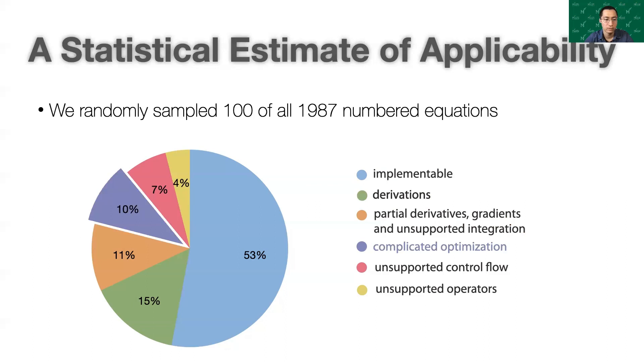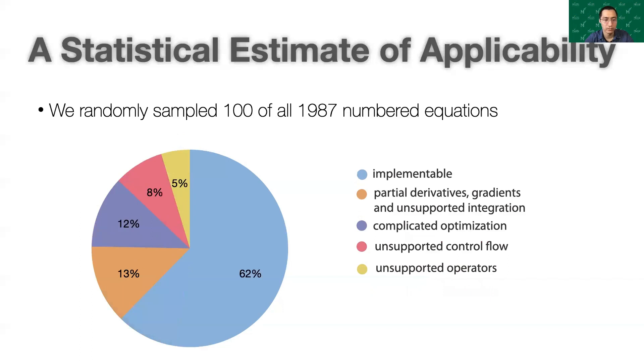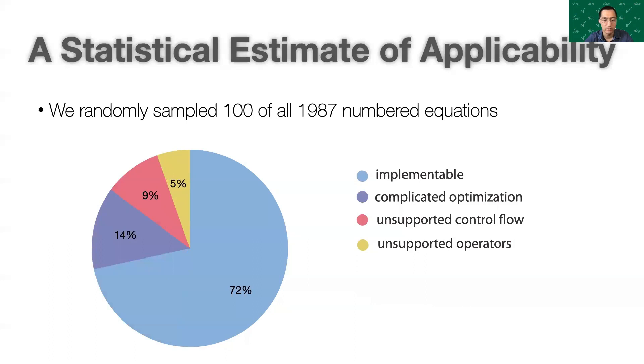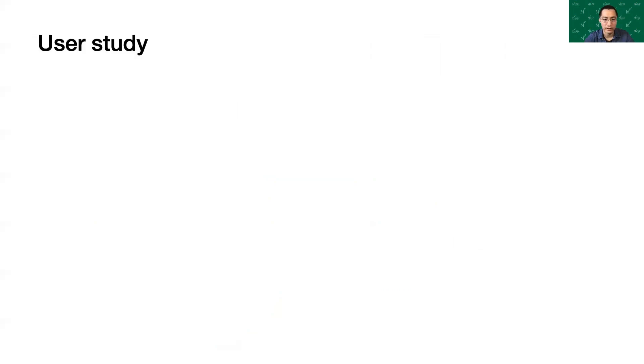15 are derivations, they aren't meant to be implemented. 11 rely on partial derivatives and gradients and unsupported integration. 10 express complicated optimization problems, 7 use unsupported control flow, and 4 use unsupported operators. The derivations are unimplementable, without them the implementable ratio will be 62 percent.